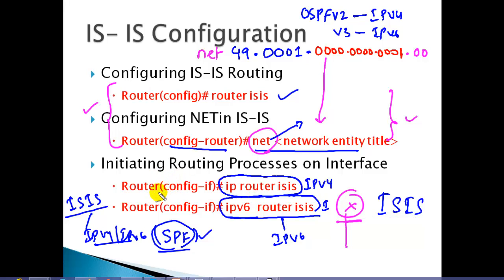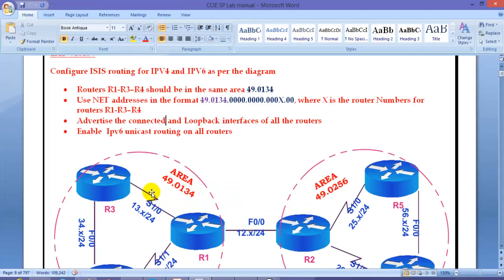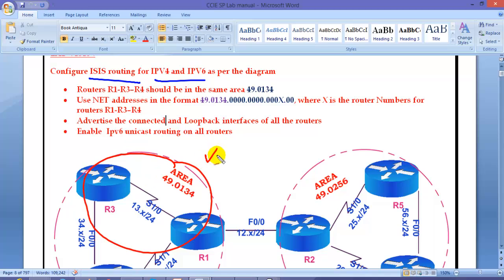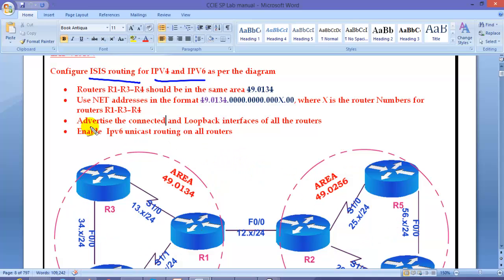These are the minimum configurations needed to run IS-IS on your routers. We are ready to start our lab. In this lab, I'm going to use six routers. The task is to configure IS-IS for both IPv4 and IPv6. I have three sets of routers — three routers will be configured in one area and the remaining three in a different area. After that, we will exchange routes between the areas and add some advanced optimization commands and verify them.